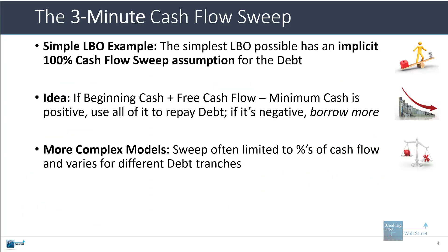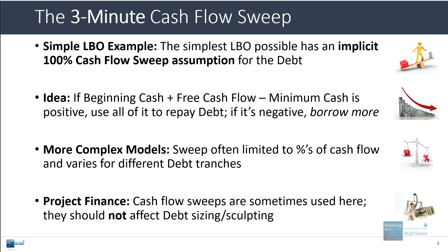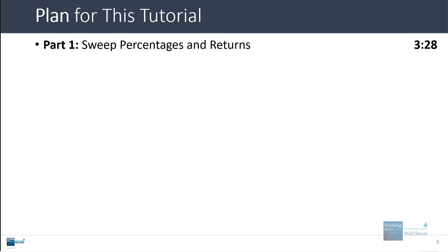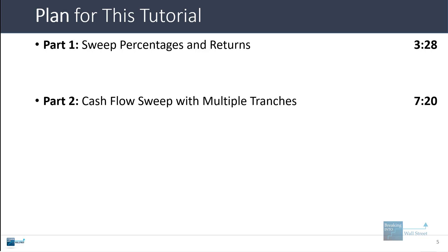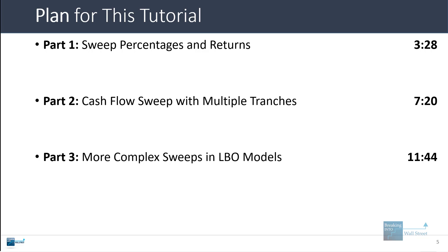In more complex models, the sweep will often be limited to specific percentages of cash flow — it might be 50% or 25%. It might also vary for different debt tranches. Cash flow sweeps can come up in project finance as well, but they should not affect the debt sizing and sculpting, which are set in advance based on expected cash flows from the asset, since those tend to be more predictable. Now let's go into more detail: sweep percentages and returns, cash flow sweeps with multiple debt tranches, more complex sweep schedules in LBO models, and the project finance angle.